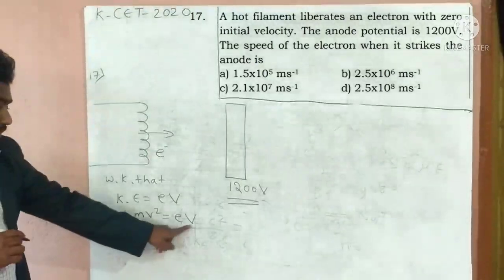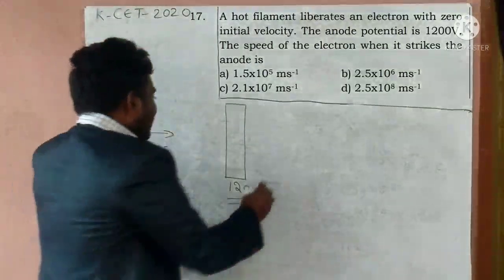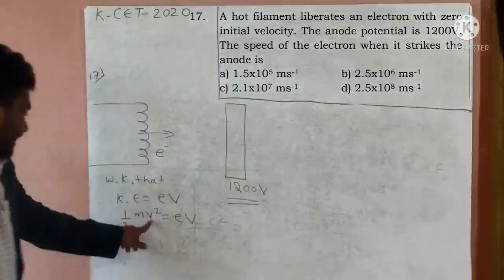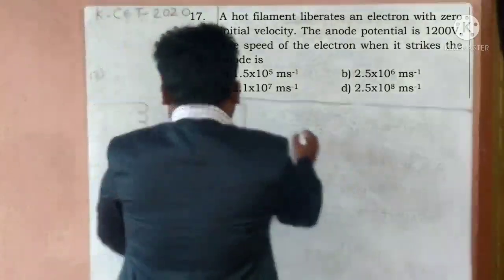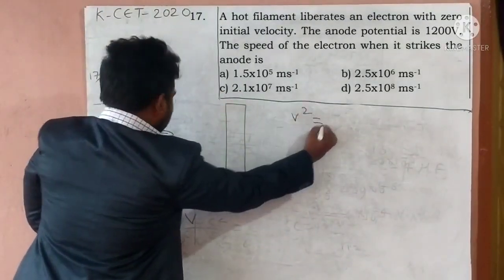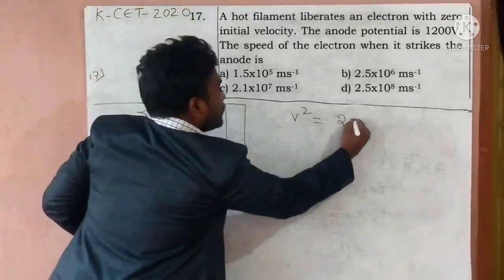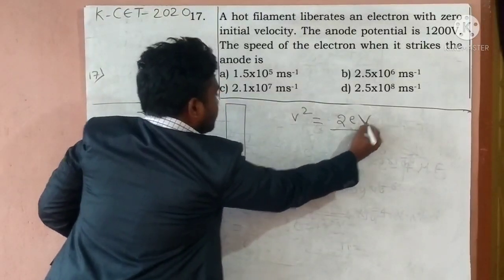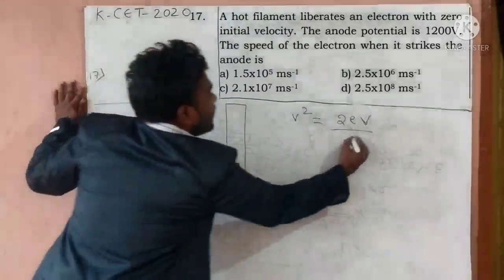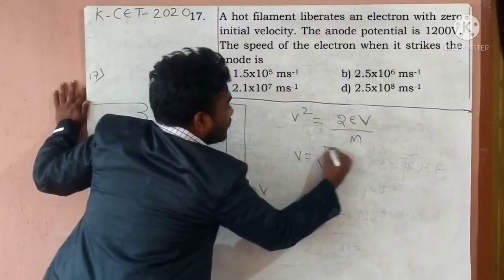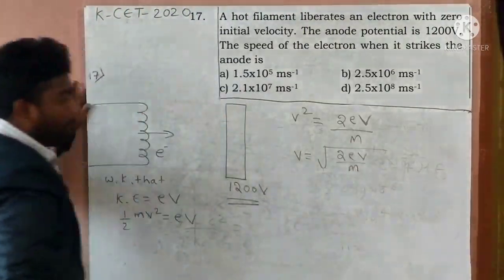This is V the velocity. This is V the potential. Don't confuse. I want speed. I want speed in the calculation. V square is equal to 2 into EV divided by divided by mass. So V is equal to square root of 2EV divided by mass.